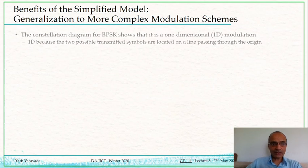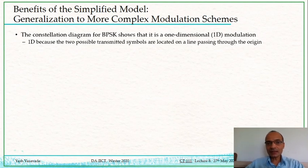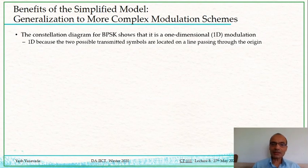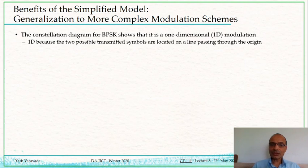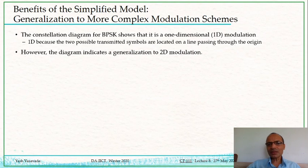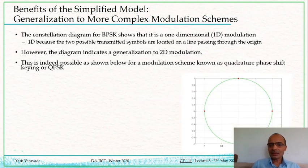There is one other benefit of this simple model: it very nicely and conceptually easily generalizes to more complex modulation schemes. You may have noticed that the constellation diagram for BPSK and for all these different schemes we looked at is one-dimensional — the two constellation points are connected on a line that passes through the origin. That tells us there is a possibility of generalizing to two-dimensional schemes.